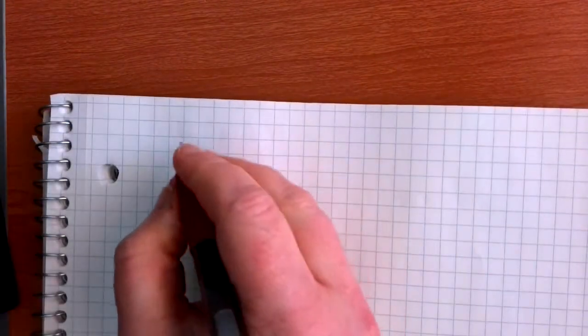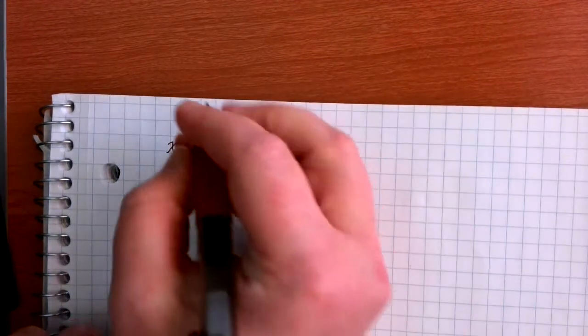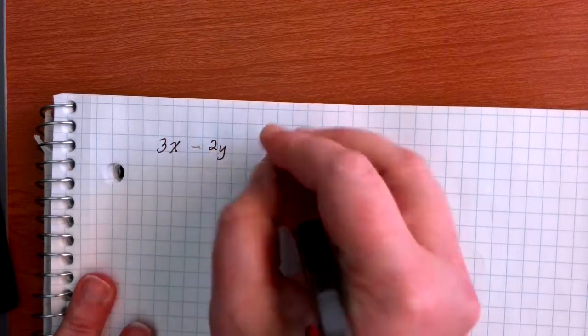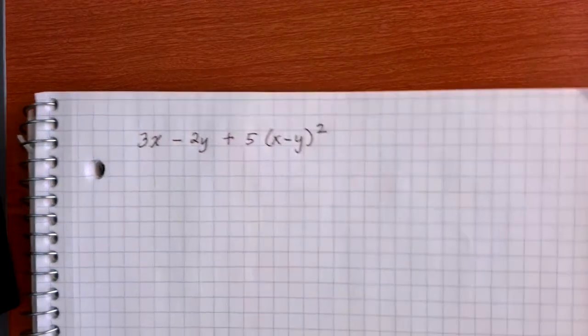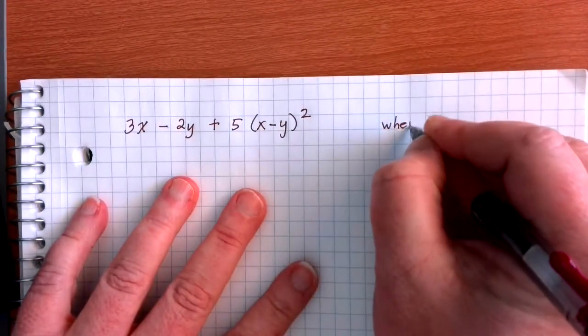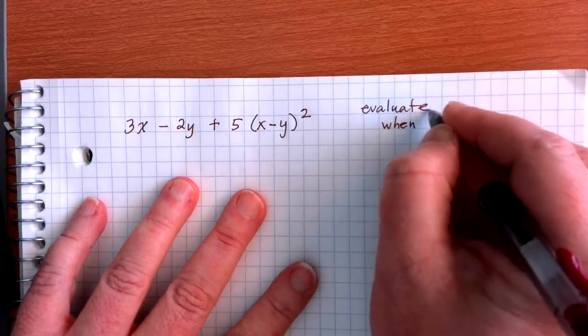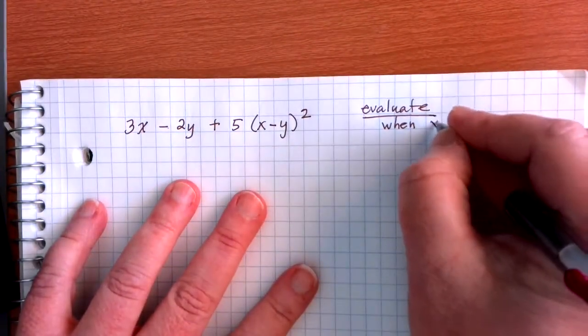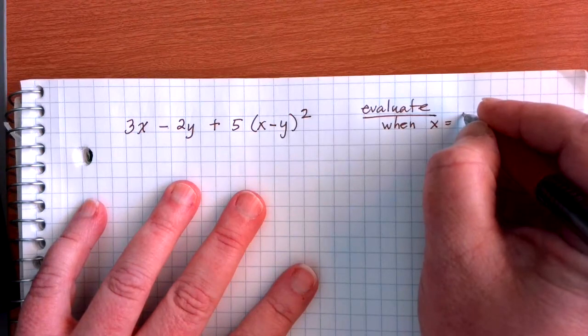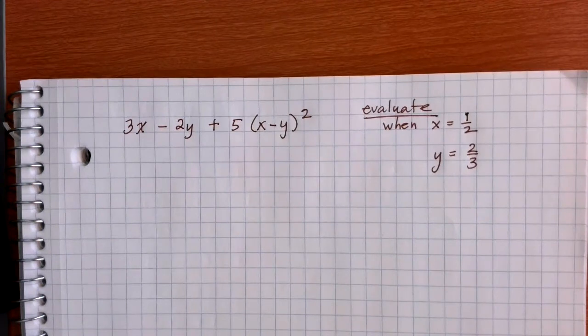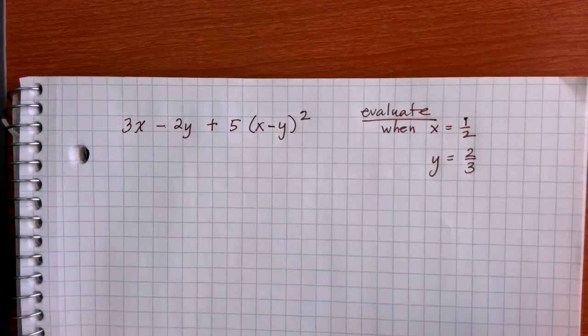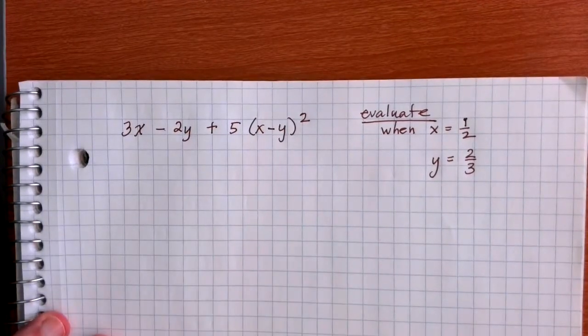We can have as many variables as we want in our different problems. Let's suppose we have 3x minus 2y plus 5(x minus y) squared. I have two variables in my formula. Remember, evaluate means we plug different values in for each of our variables. Let's evaluate this when x equals one-half and y equals two-thirds. There's nothing that says our values need to be regular integers — fractions are perfectly valid, and this will let us review some fraction rules as well.